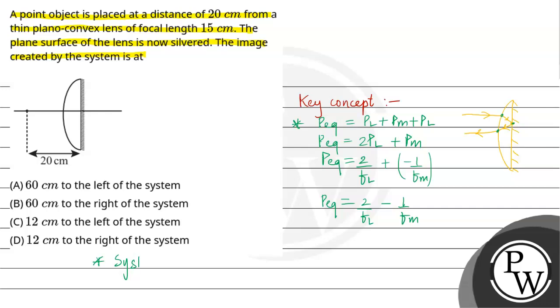Our system will be diverging nature. Our system ek diverging nature jaisa behave karta hai. Matlab P_equivalent is equal to minus 1 by F_eq, matlab ek mirror ke tarah behave karega, concave mirror jaisa. Isliye minus aapne ke ho, concave mirror. So behave karega pura system.